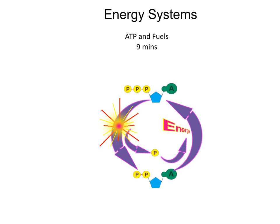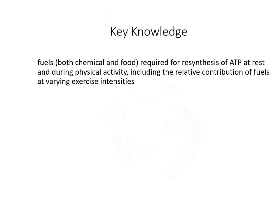We now turn our attention to energy systems. It's familiar territory for people who did Units 1 and 2 last year, and if it's something new for you, feel free to pick the brains of those people or ask for the PowerPoints from last year. The key knowledge basically looks at how we get different food fuels into our body, how they convert to chemical fuels to help restore or resynthesize ATP, and how to apply that according to intensity, duration, and type of exercise, and how the energy systems work together.